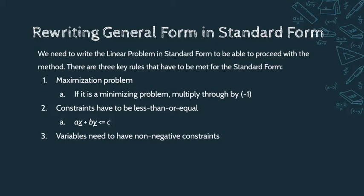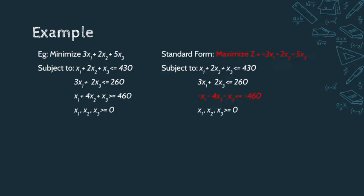Secondly, the constraints need to be less than or equal inequalities in this format. Lastly, the variables need to have non-negative constraints. Here we can see an example where we have a linear program which is not in standard form. We multiply the minimizing problem and the inequality by negative one to get it into standard form.